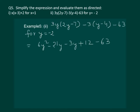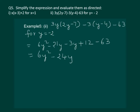Now we have to find the value of this algebraic expression for y equal to minus 2. So, we will substitute y equal to minus 2 in this expression, but here we can also notice two like terms. So, it would be easier for us to solve the question if we first combine these two like terms and get a simplified expression as 6y squared minus 24y minus 51.